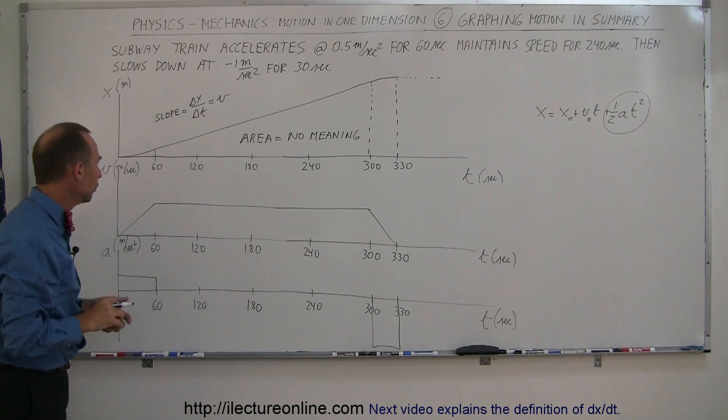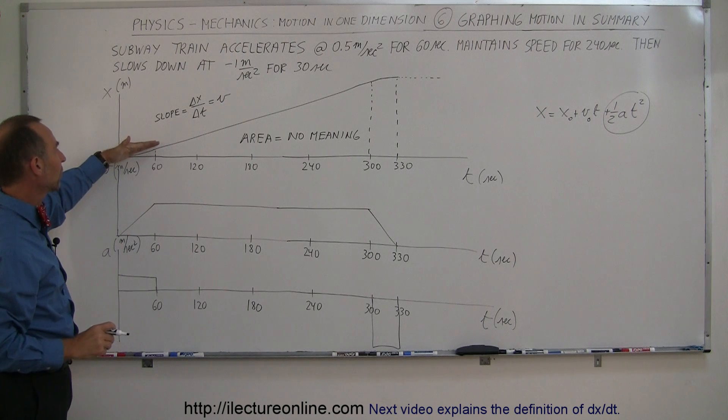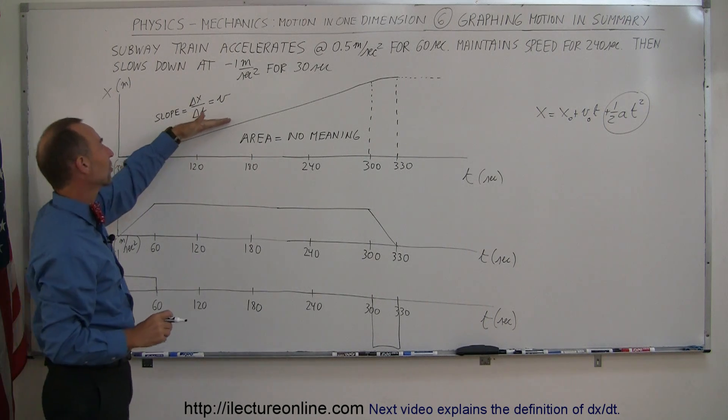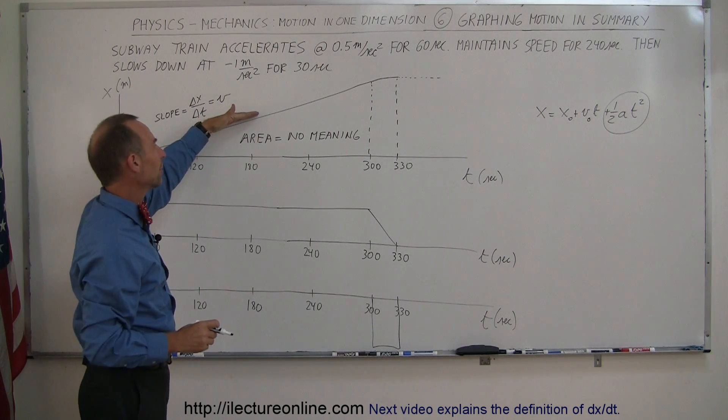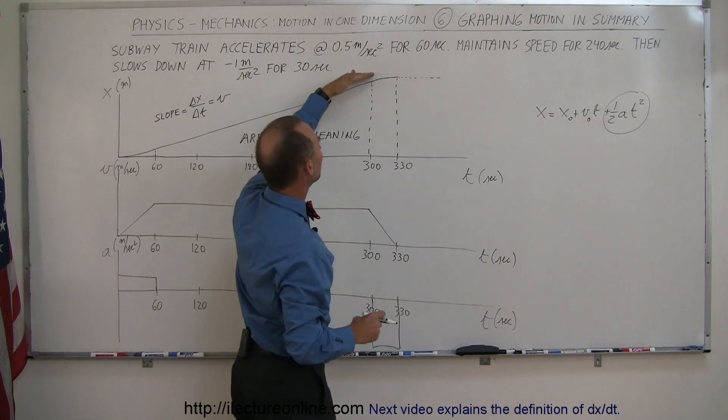Notice as the slope increases, velocity increases. As the slope maintains the same, it's constant here, that means velocity is constant. Here the slope is decreasing, velocity changes back to zero.